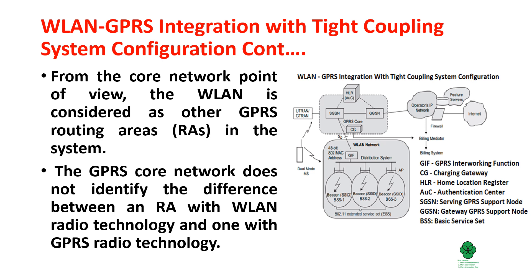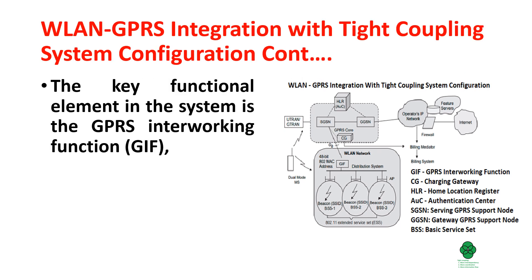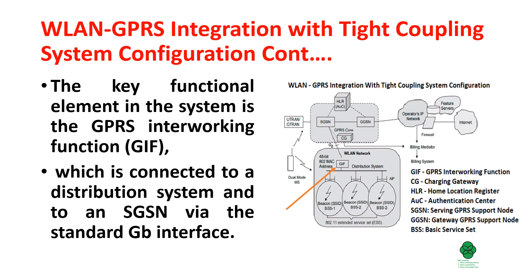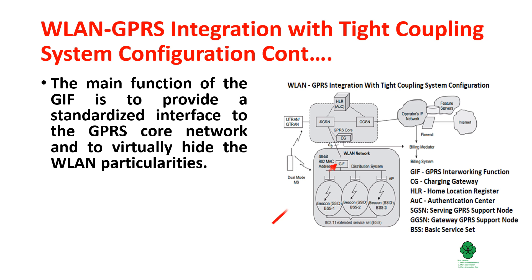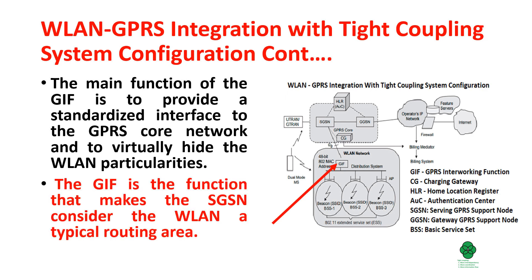The GPRS core network does not identify the difference between a routing area with WLAN radio technology and one with GPRS radio technology. The key functional element in the system is the GPRS Interworking Function, here shown connected to a distribution system and to an SGSN via the standard GB interface. The main function of the GIF is to provide a standardized interface to the GPRS core network and to virtually hide the WLAN particularities, making the SGSN consider the WLAN a typical routing area.